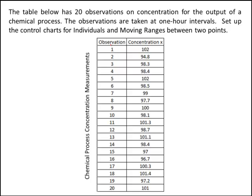Let me go through the table. Observation 1, the concentration measurement is 102, made at the first hour. At the second hour, the second observation on concentration is 94.8. Observation 3 is 98.3. Observation 4 at the fourth hour is 98.4, and so on. For the 20-hour time period, we have 20 different measurements, and these are the measurements that we're going to put on the individuals chart.